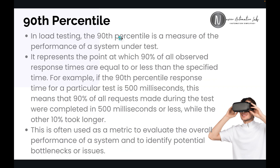In load testing, the 90th percentile is a measurement of the performance of a system under test. It represents the point at which 90% of all observed response times are equal to or less than a specified time — for example, 500 milliseconds. This means that 90% of all requests — whether the total number is 10,000, 1000, 100, or 500 — were completed in 500 milliseconds or less, while the other 10% took longer. This is often used as a metric to evaluate the overall performance of a system and to identify potential bottlenecks or issues.